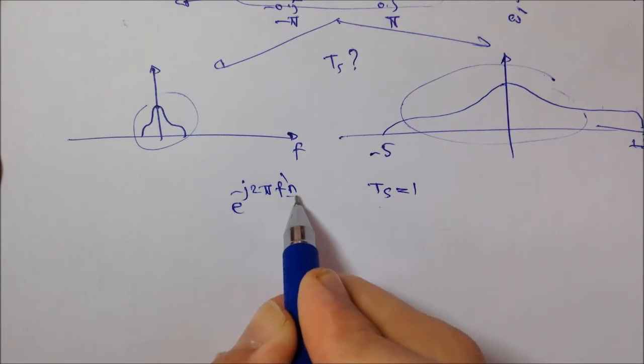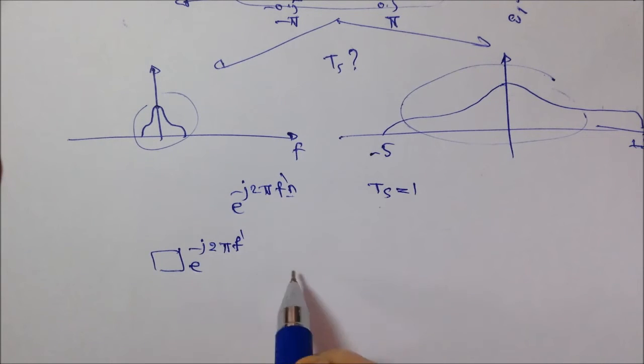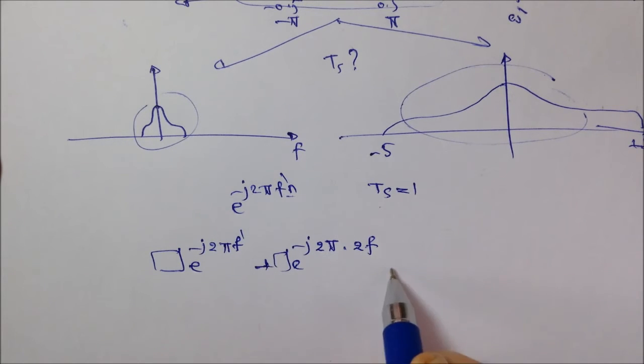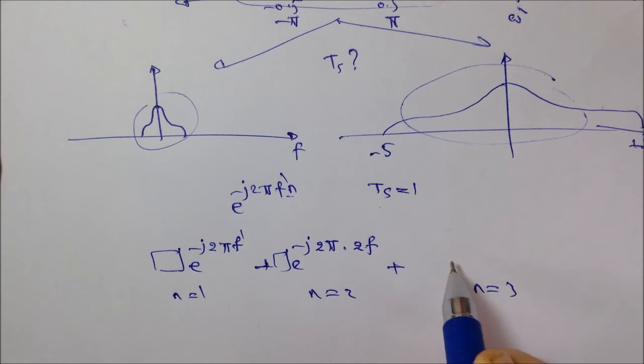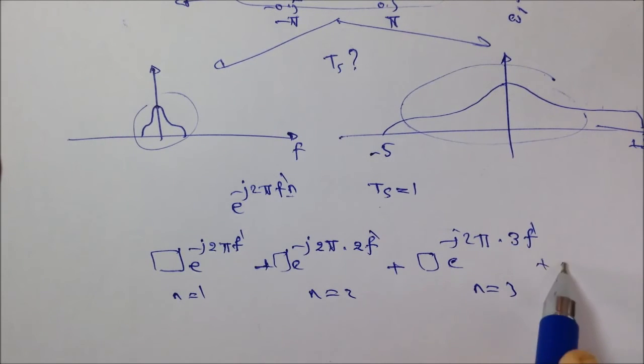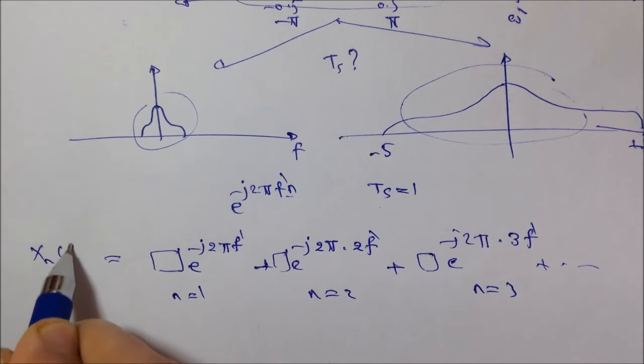You can look at it as follows. As if we have assumed that Ts equal to 1. When n equal to 1, we have e to minus j 2π f prime n with some factor. And then, when n equal to 2, we have e to minus j 2π dot 2 f prime, of course with some factor. And when n equal to 3, we have factor and e to minus j 2π dot 3 f prime, and so on. And then, eventually, we get X normalized of f prime.